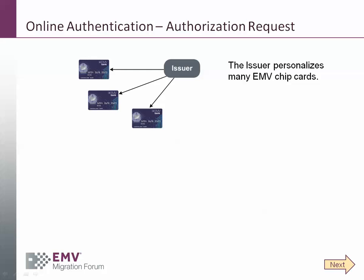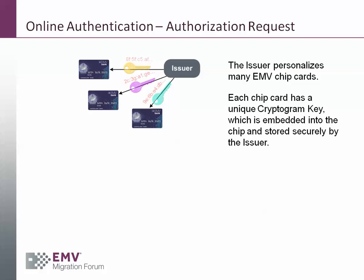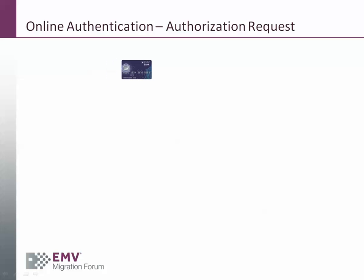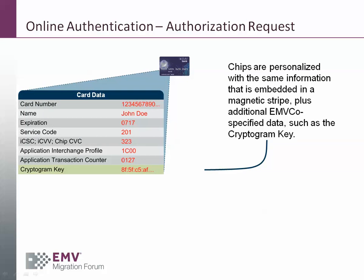The issuer personalizes many EMV chip cards, and each chip card has a unique cryptogram key which is embedded into the chip and stored securely by the issuer. Each chip card is personalized with the same data embedded into the magnetic stripe, but it also includes some additional EMV co-specified data, such as the cryptogram key.